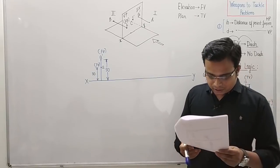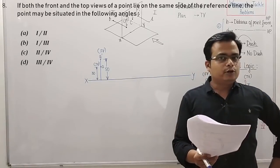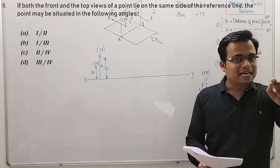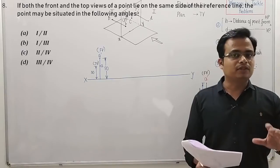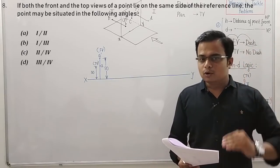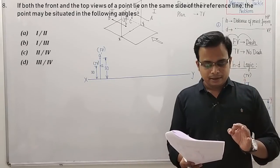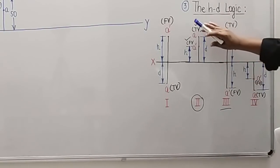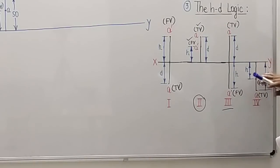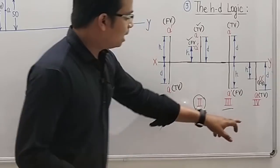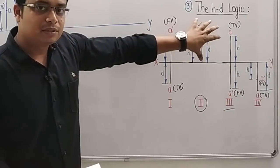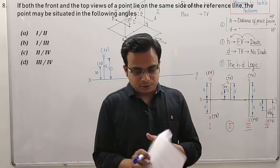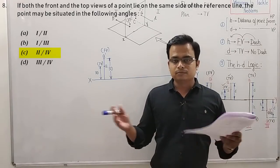Problem number eight: 'If both the front and top views of a point lie on the same side of the reference line, the point may be situated in which angles?' If both H and D are above the XY line, that's the second quadrant. If both are below the XY line, that's the fourth quadrant. Both are correct — the answer is option C: second and fourth angle.